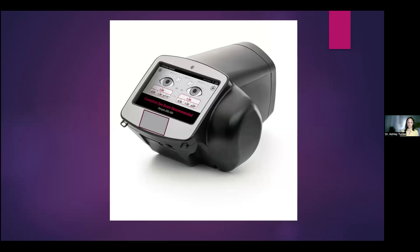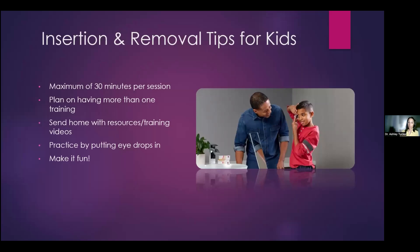Some insertion and removal tips for kids: a max of 30 minutes per session. If a kid hasn't made progress in 30 minutes, another 30 minutes isn't going to do anything but upset them. Plan on having more than one training session — I just tell the parents upfront: I expect there to be more than one visit and that's okay. Send home the patient with resources and training videos. Have them practice by putting eye drops in if they're having a particularly difficult time.